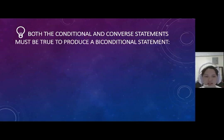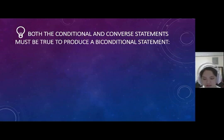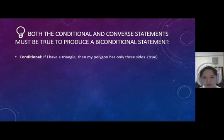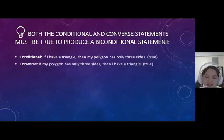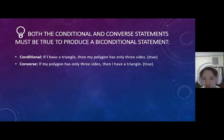Both the conditional and converse statements must be true to produce a biconditional statement. The conditional is: if I have a triangle, then my polygon has only three sides, which is true. And the converse is: if my polygon has only three sides, then I have a triangle, which is also true.